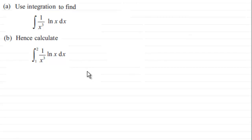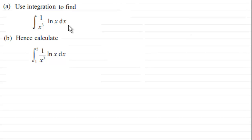So what do we have here? We've got to use integration to find the integral of 1 over x cubed multiplied by the natural log of x, integrated with respect to x, and then find the value with limits between x equals 1 and x equals 2.